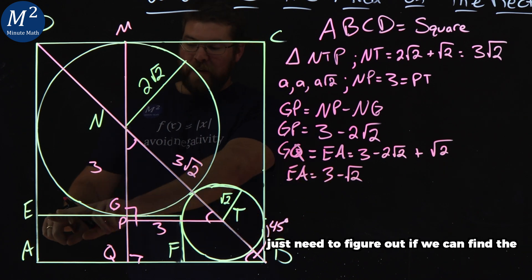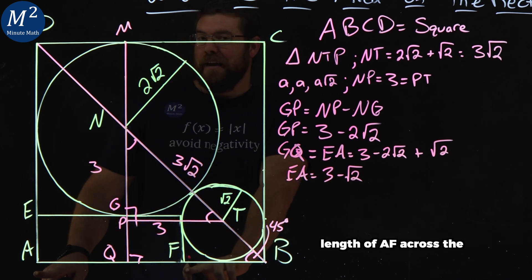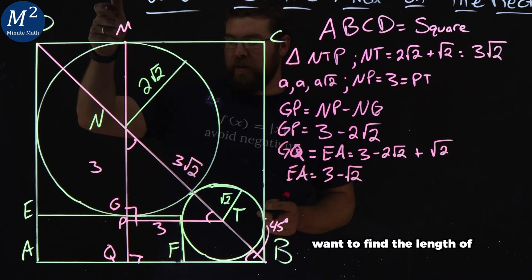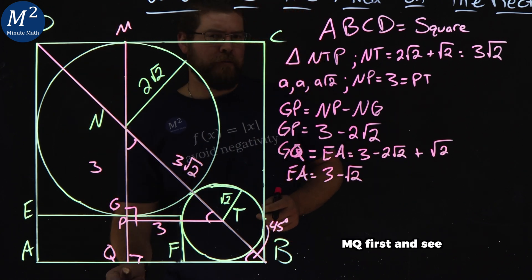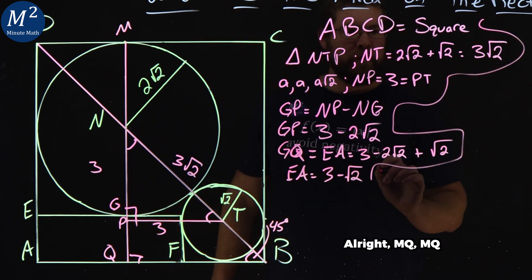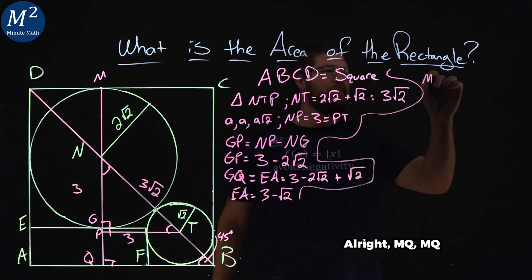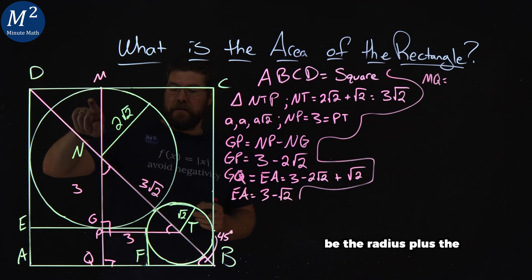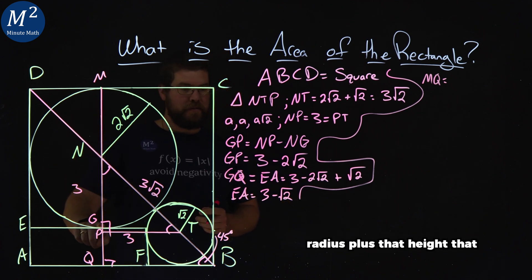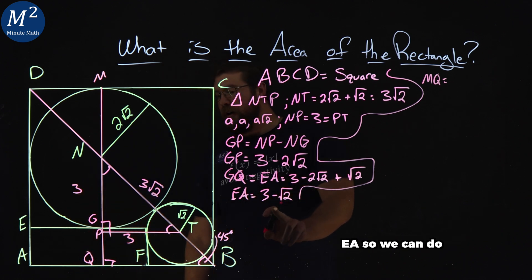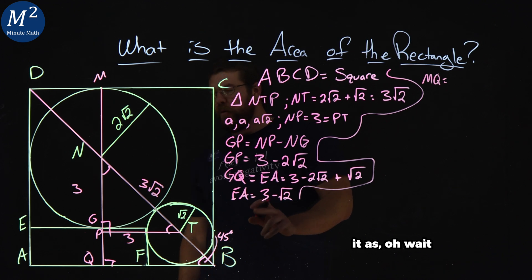So now we just need to figure out if we can find the length of AF across the board here. Now to do that, I want to find the length of MQ first. You'll see why in a second. So let me separate this out here. MQ, that length, well, that's going to be the radius plus the radius plus that height that we just found here of EA. So we can do it as, why don't we do it like this?